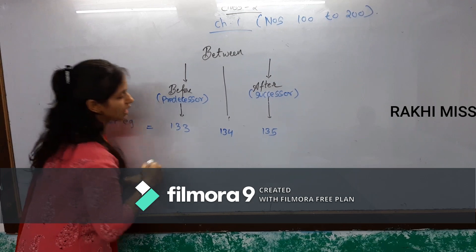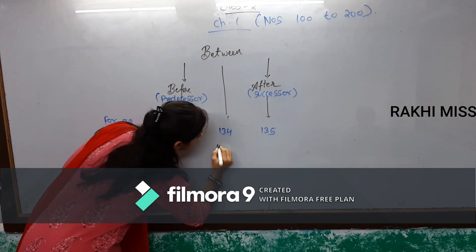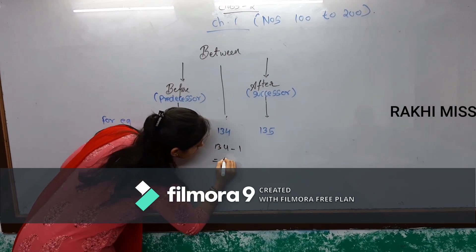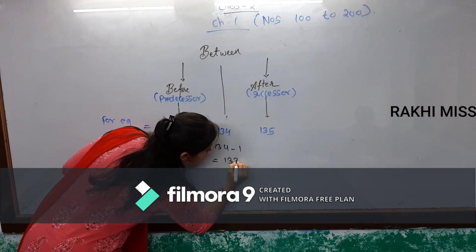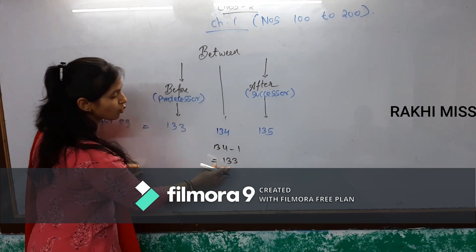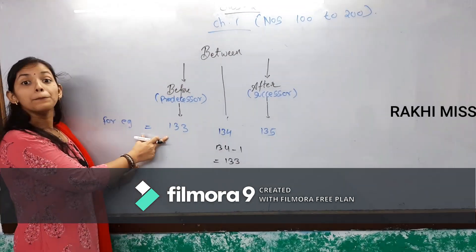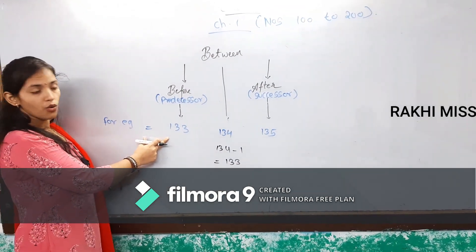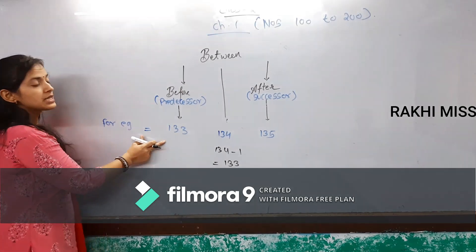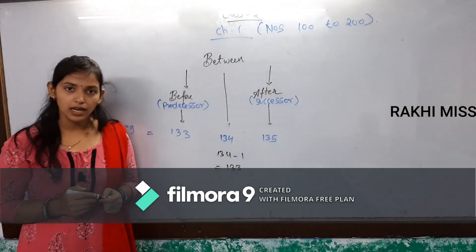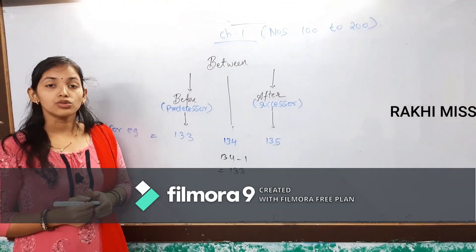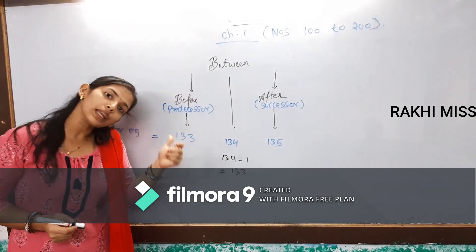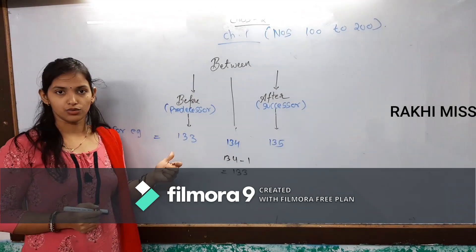For example, 134 minus 1 will count 133. So 133 is your predecessor. In predecessor, aapko minus 1 karna hain. So that is your before, and before you can say predecessor also.